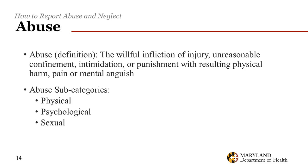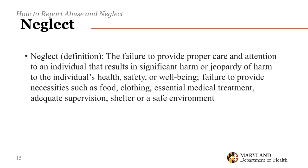Abusive statements are intended to humiliate or infantilize and include insults, threats of abandonment or institutionalization, and other controlling, dominant, or jealous behavior. The third form is sexual abuse, which involves sexual acts performed for the purpose of arousing or experiencing sexual thoughts, feelings, or sexual dominance or power, and not for purposes related to the provision of care. It can also include physical or non-physical contact. Neglect is defined as the failure to provide proper care and attention to an individual that results in significant harm or jeopardy of harm to the individual's health, safety, or well-being, including failure to provide necessities such as food, clothing, essential medical treatment, adequate supervision, shelter, or a safe environment.